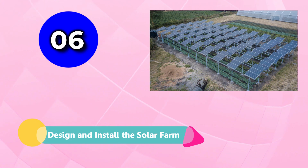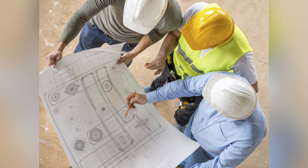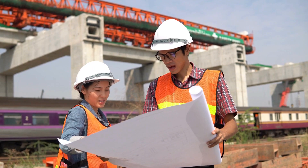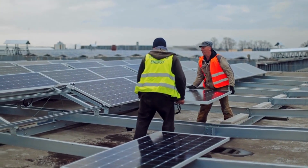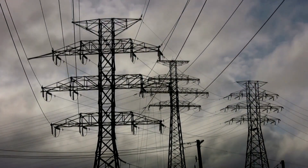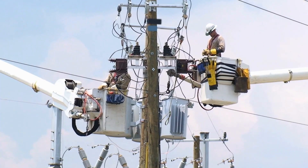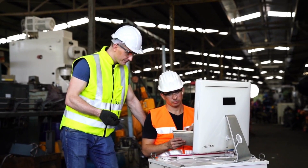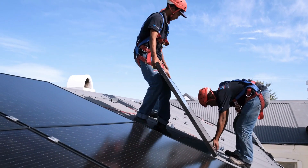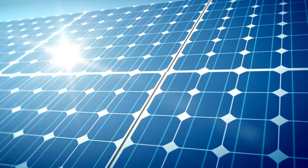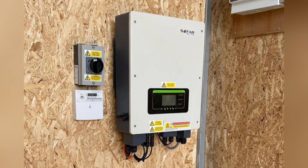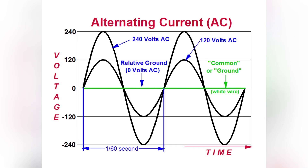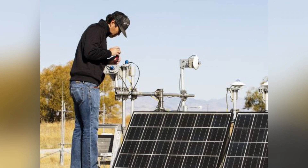Step 6: Design and Install the Solar Farm. Once you have secured all necessary permits and approvals, it is time to design and install your solar farm. This process involves designing and engineering the electrical system, selecting and installing the solar panels, and connecting the solar farm to the electrical grid. You will need to work with a licensed electrical contractor and an engineering firm to ensure that the system meets all relevant codes and standards. The solar panels will need to be positioned and angled to maximize exposure to the sun and ensure optimal energy production. The installation process should also include the addition of inverters, which convert the direct current (DC) energy produced by the solar panels into alternating current (AC) energy that can be used by the electrical grid.